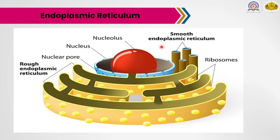The endoplasmic reticulum varies from cell to cell. However, erythrocytes, eggs, and embryonic cells lack endoplasmic reticulum. That means in these particular types of cells, the endoplasmic reticulum is absent. These are the main points of the introduction to endoplasmic reticulum.